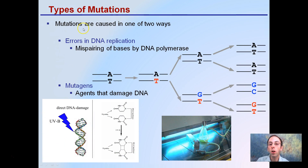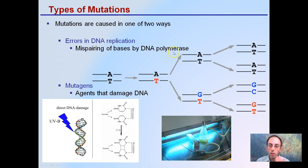Types of mutations: mutations are caused two ways. First, errors in DNA replication by mispairing a base by DNA polymerase — we could have A and T bind together normally, but here we have a T binding to a G, and that's causing a mutation.